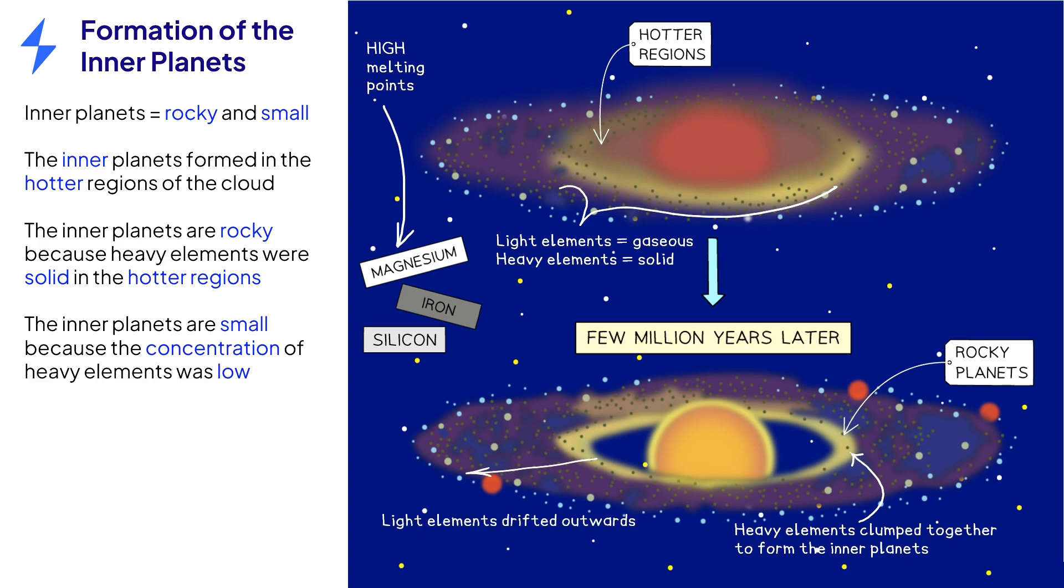As the Sun began to radiate energy, any leftover gas and dust would have been blown away into the outer disk. When revising this topic, make sure you can explain the properties of the inner planets, for example their high densities, in terms of the accretion model.